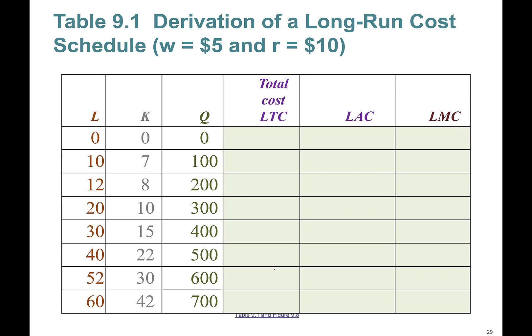Long-run marginal cost is the change in long-run total cost divided by the change in quantity. So we can actually work on this table. It is your job to work on this. I will tell you to pause this video at some point, and please pause it when the time comes and work on it on your own, but I'm going to give you some details.